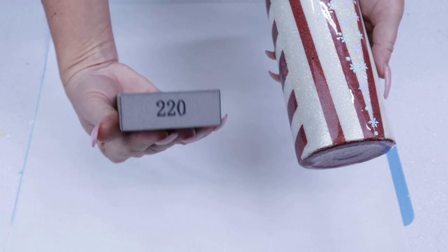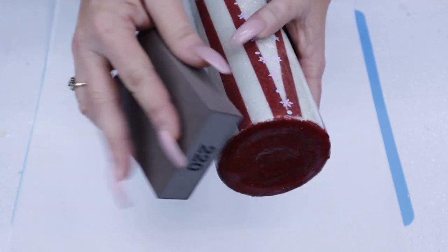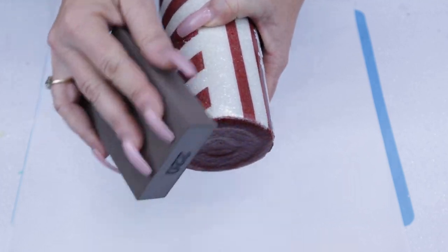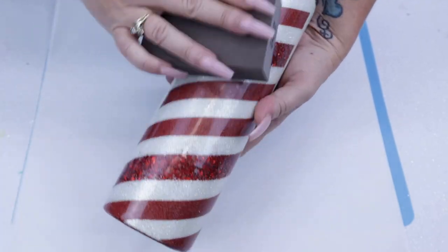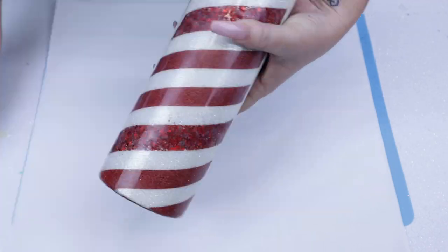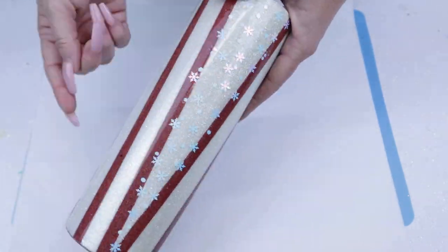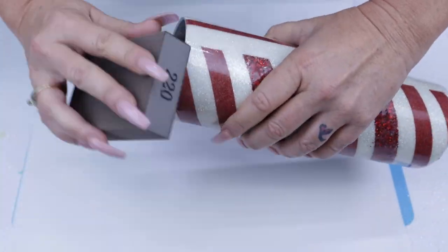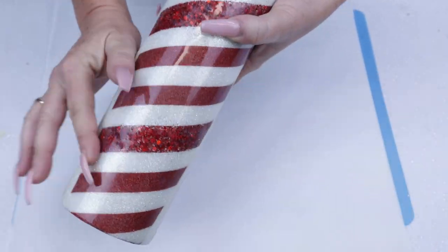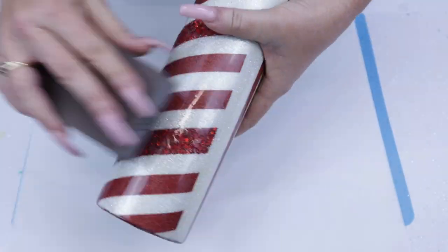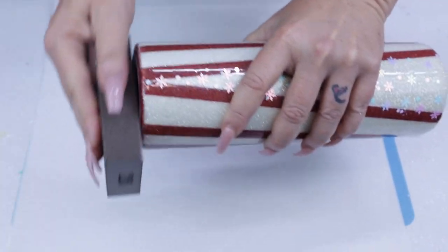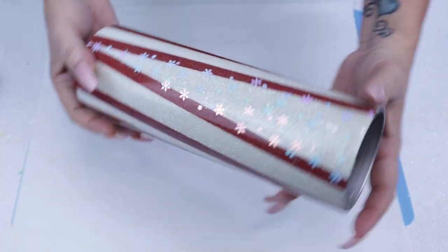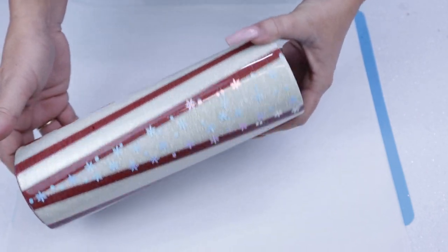Now we're going to go ahead and use a 220 block to sand down the bottom and the top and where I have chunky glitter. I'm asked all the time how I sand my tumblers, so I thought it was time to go ahead and show you guys. Do not sand where you applied your glitter shapes because they could just easily come off. I only also used alcohol in order to clean this tumbler.